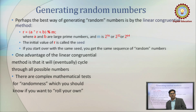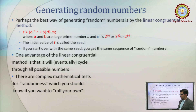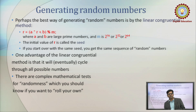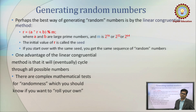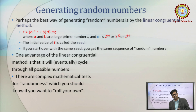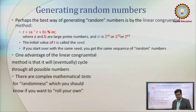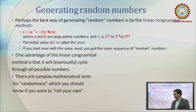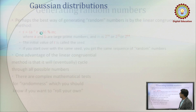One advantage of the linear congruential method is that it will cycle through all possible numbers. There are complex mathematical tests for randomness — statistical tests that are a mechanism to test the randomness of any sequence. Our objective here is not to go through statistical study, but to understand the randomized algorithm.